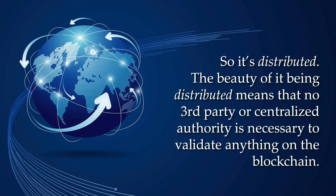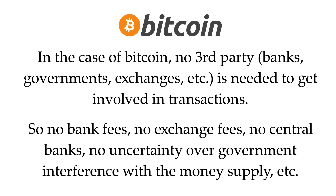This means it's distributed — not centralized. No third party or centralized authority is necessary to validate anything on the blockchain. This is very useful and revolutionary, as you can see with just Bitcoin, for example. No third party is needed to get involved in transactions. This means no banks, no governments, no exchanges are used to transfer Bitcoin from one person to another. This means no bank fees, no exchange fees, no central banks.